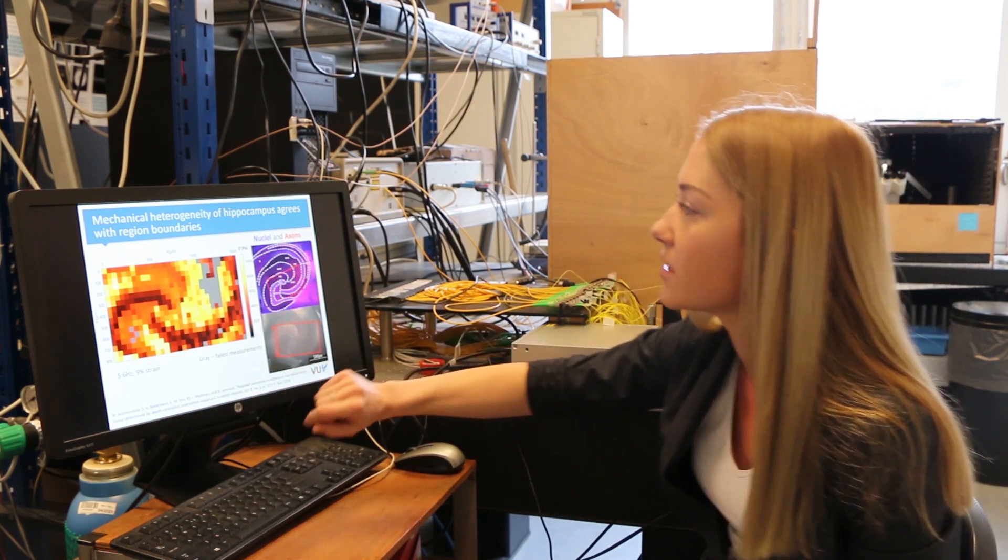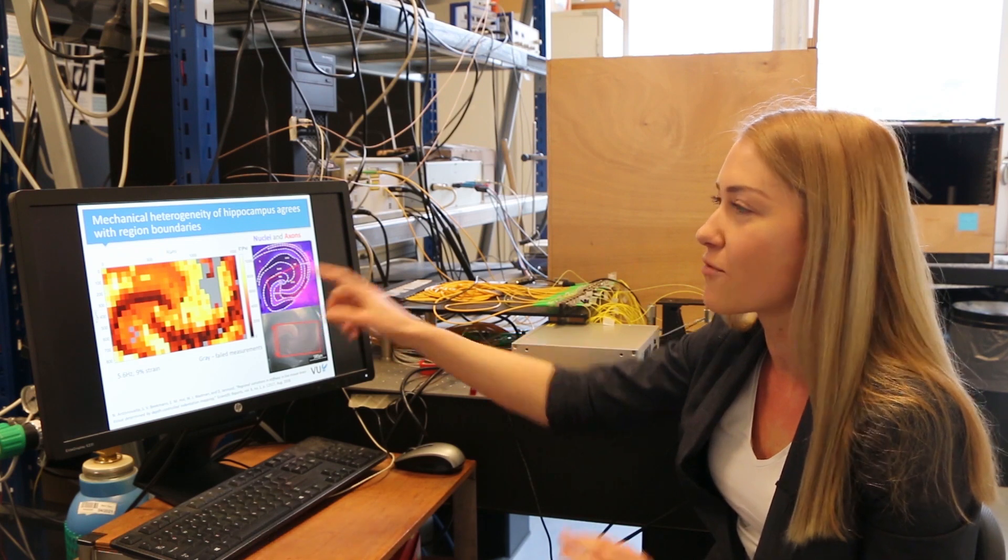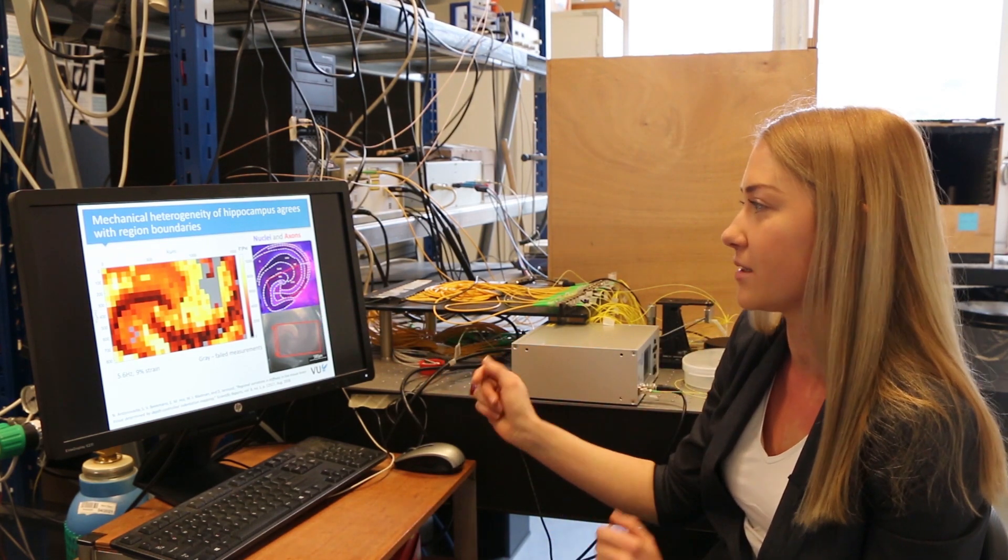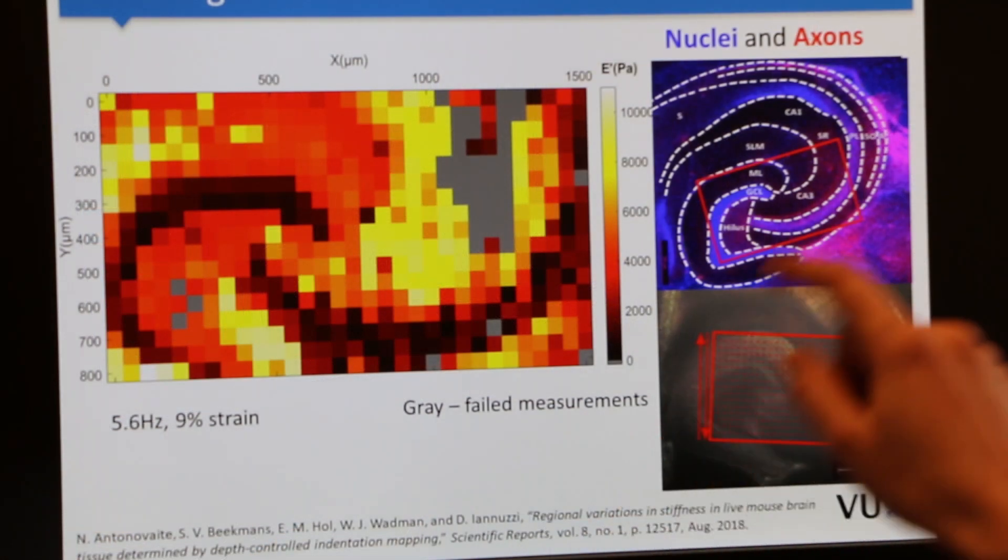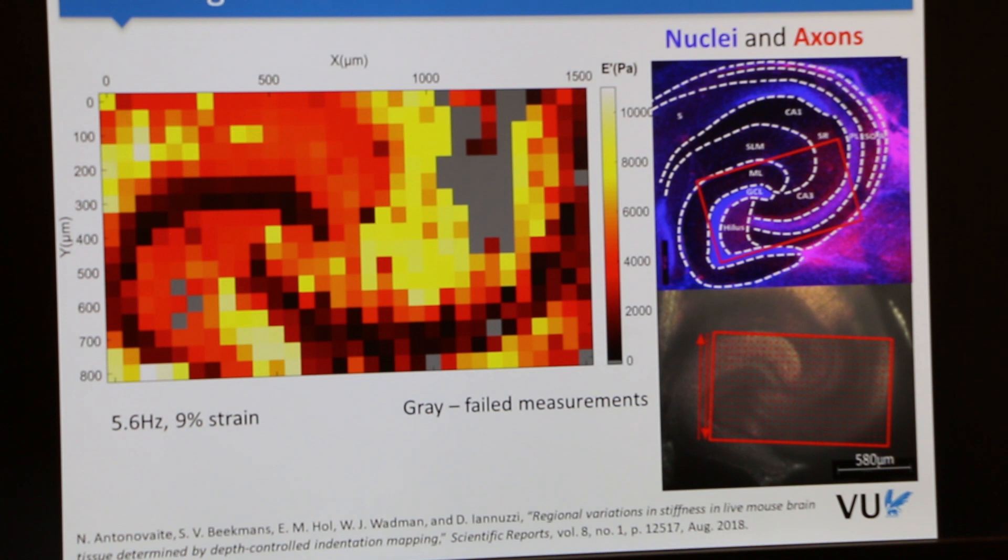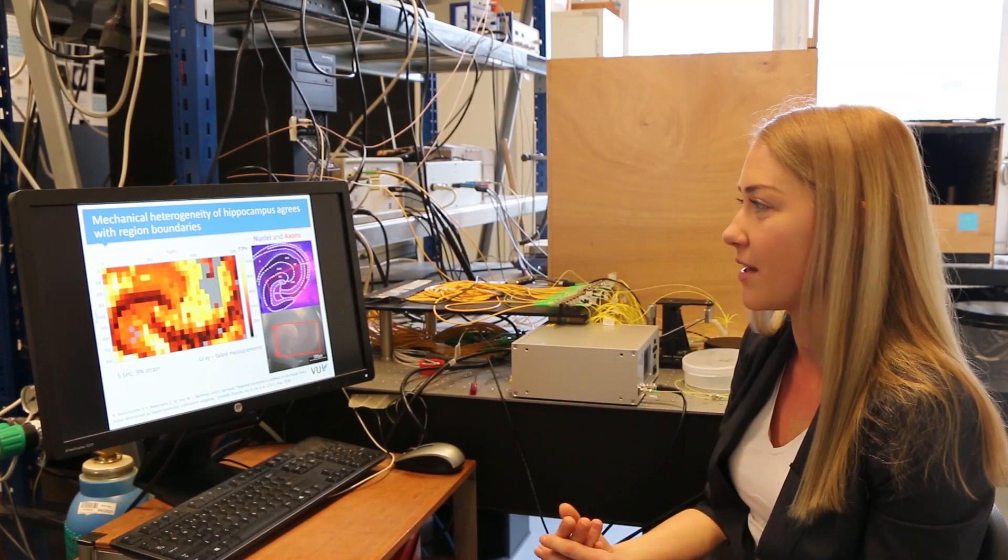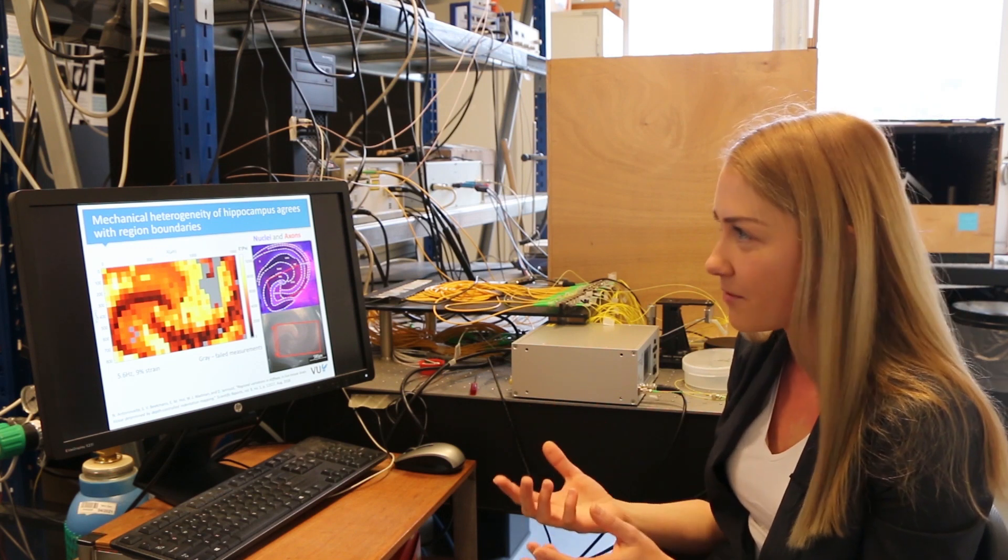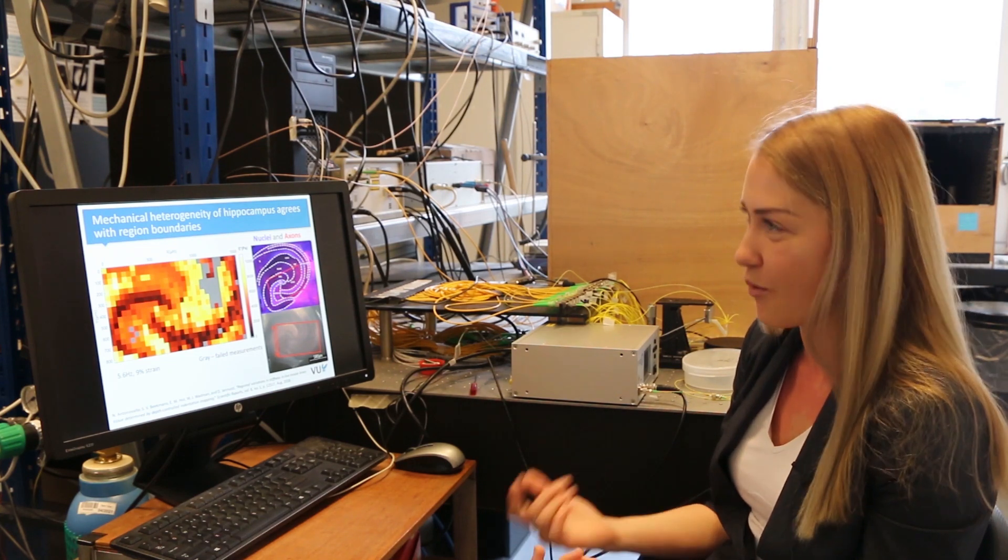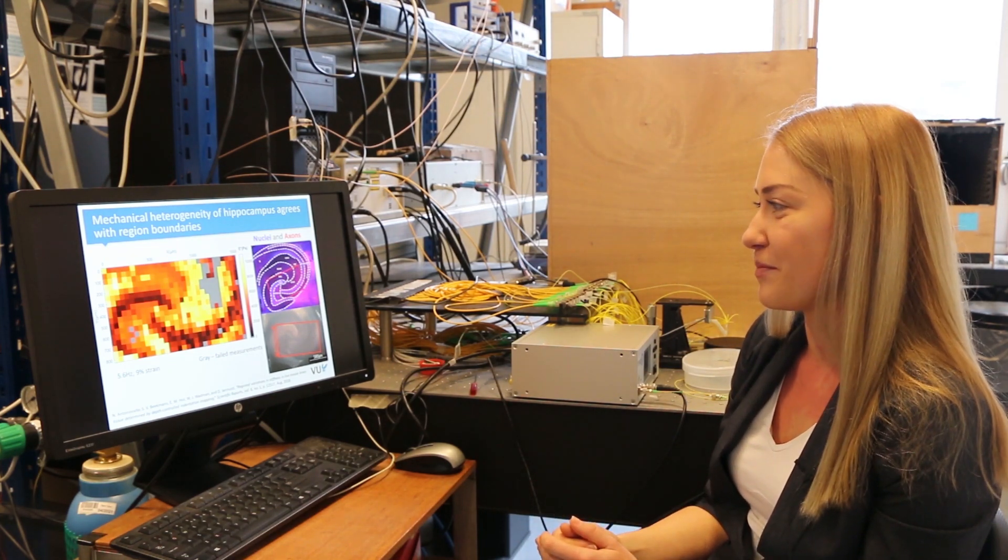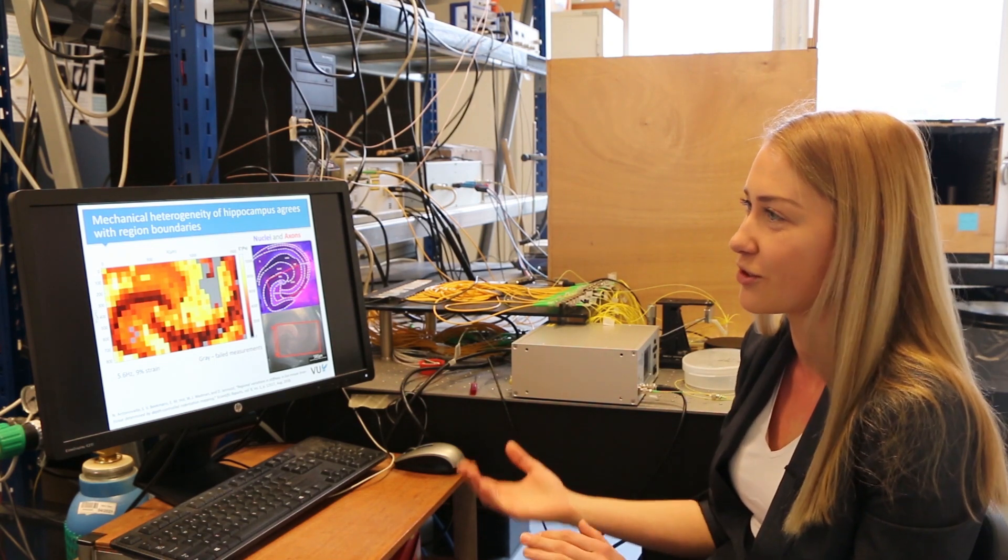So these really soft regions are the ones that have really high density of cells. And the regions with low density of cells are much stiffer. So this is our main important finding because people have thought previously that the cells in the brain, the neurons, should be the ones making the brain stiff. But actually we found the opposite. So that was surprising, but also nice. So we can use this information for the future studies.